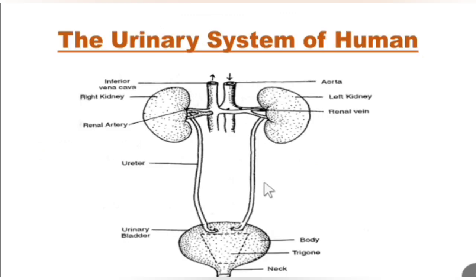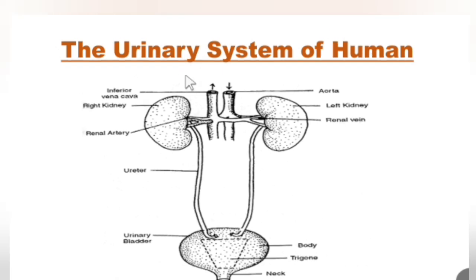First things first — what is the urinary system? This system consists of all the organs involved in the formation, storage, and excretion of urine. Now, what is urine? Urine is basically a mixture of excess water that is not required by our body, along with nitrogenous waste products.